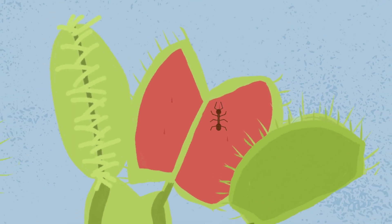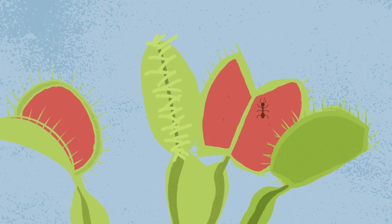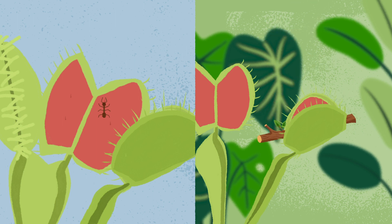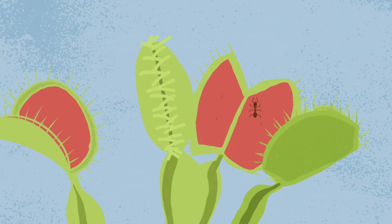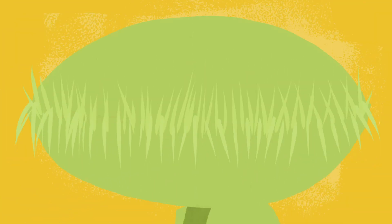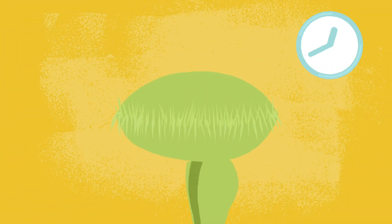Venus flytraps have evolved to wait for multiple bumps to conserve energy. Venus flytrap ancestors that tried to digest a stick or a raindroplet wasted energy, produced less seed, and did not pass on those genes. The more the prey struggles, the tighter the lobes shut. After an hour or so, the trap is locked completely.